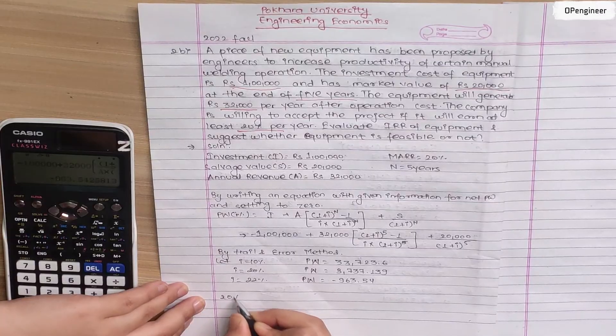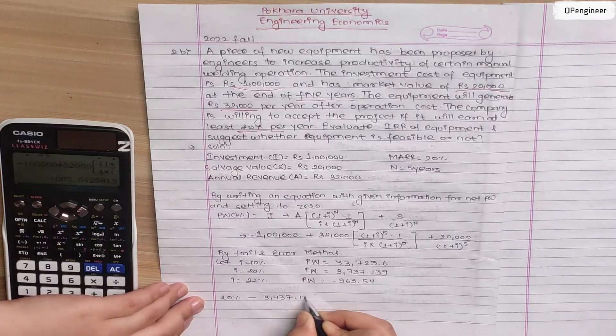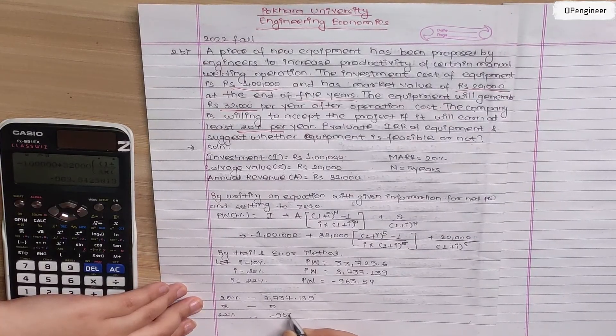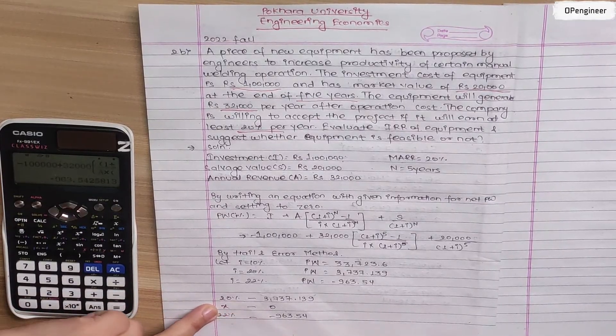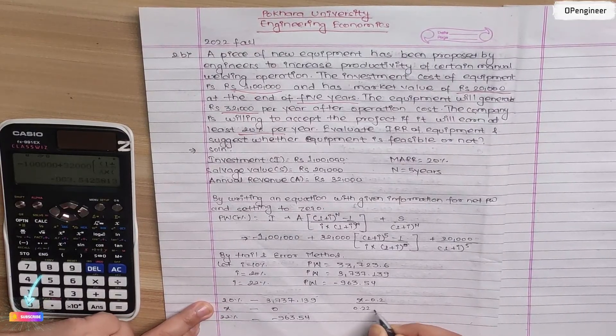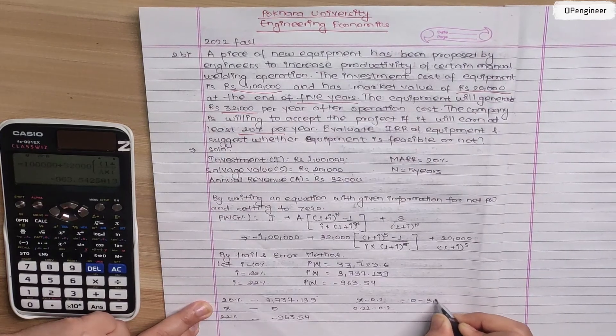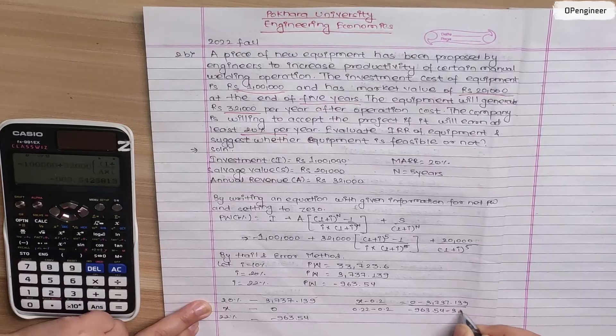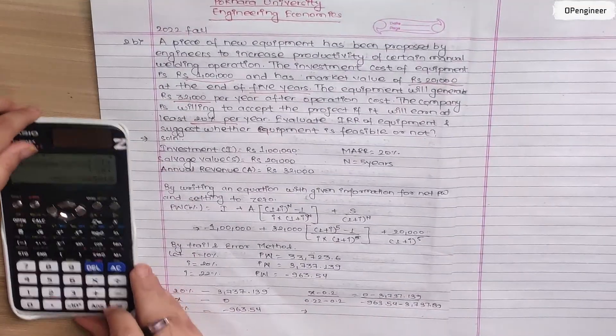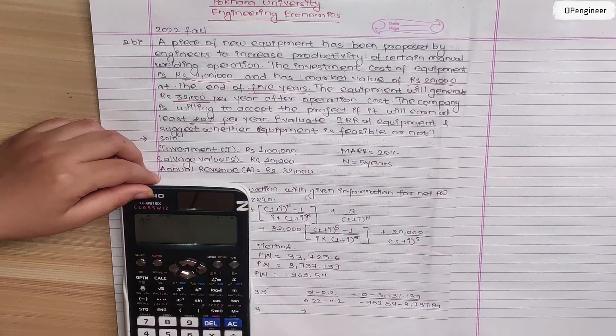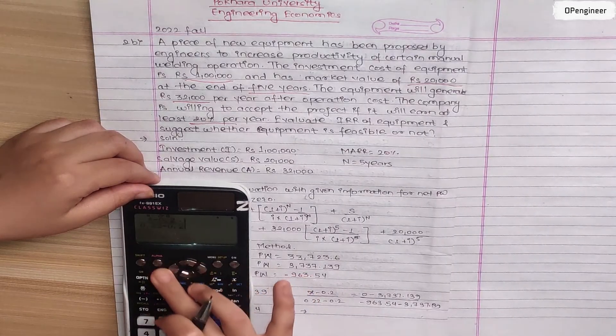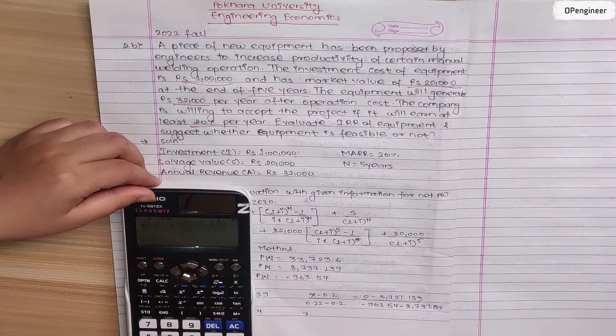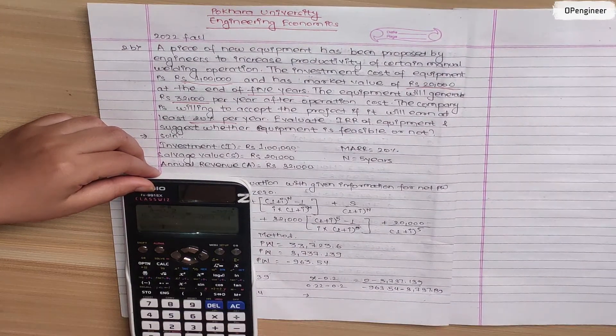At 20%, present worth is zero. At 22%, minus 963.54. Now calculating x value using interpolation: (x - 0.2)/(0.22 - 0.2) = (0 - 3,737.139)/(-963.54 - 3,737.139). Computing this in calculator gives x = 0.2159 or 21.59 percentage.